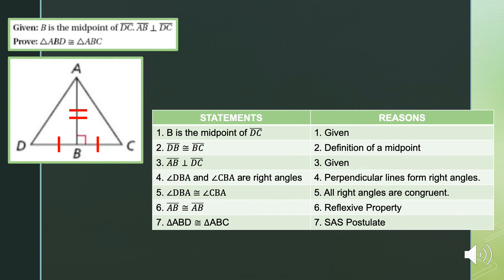Formal proof: statement one, B is the midpoint of line segment DC — given. Consequence: line segment DB is congruent to line segment BC by the definition of a midpoint. Another given: line segment AB is perpendicular to line segment DC. Consequence: angle DBA and angle CBA are right angles because perpendicular lines form right angles. Therefore, angle DBA is congruent to angle CBA because all right angles are congruent. Line segment AB is congruent to line segment AB by reflexive property. Finally, triangle ABD is congruent to triangle ABC by the SAS postulate. QED.